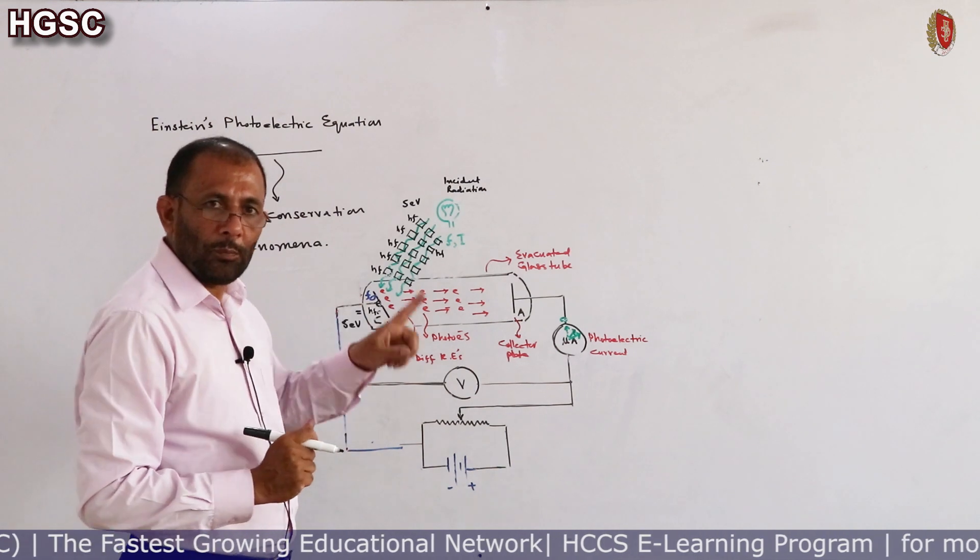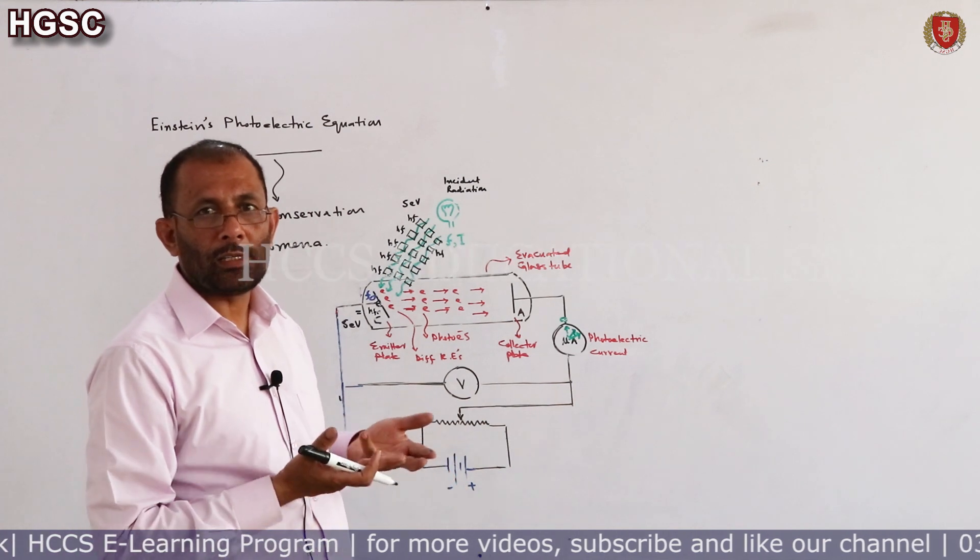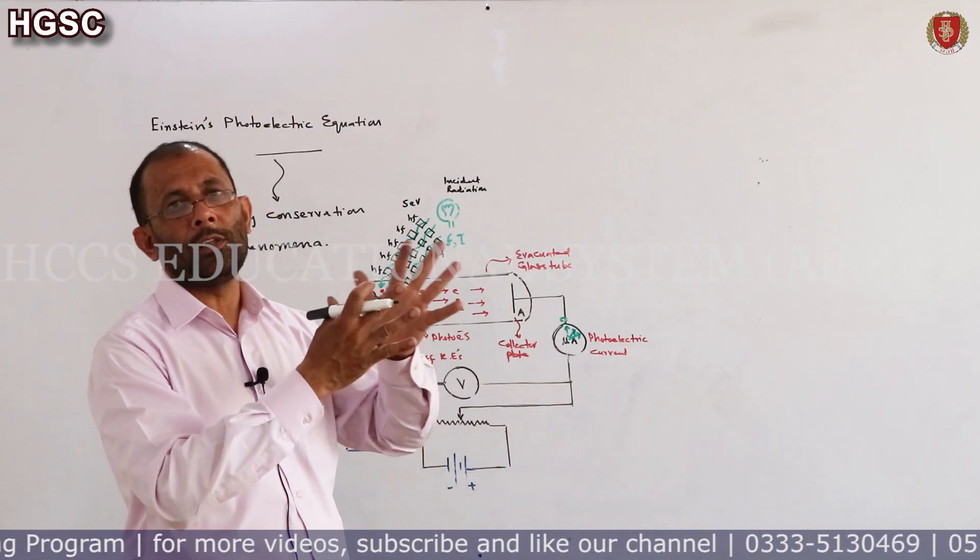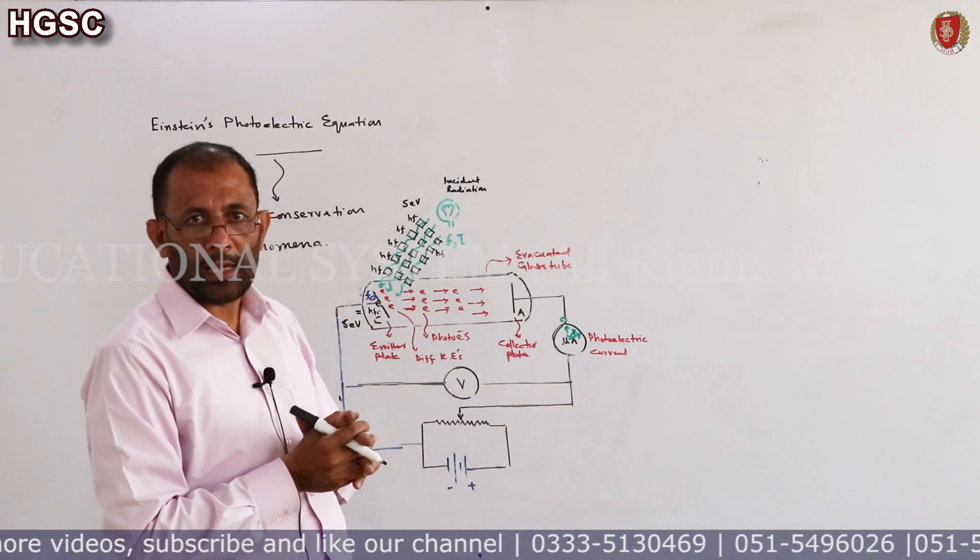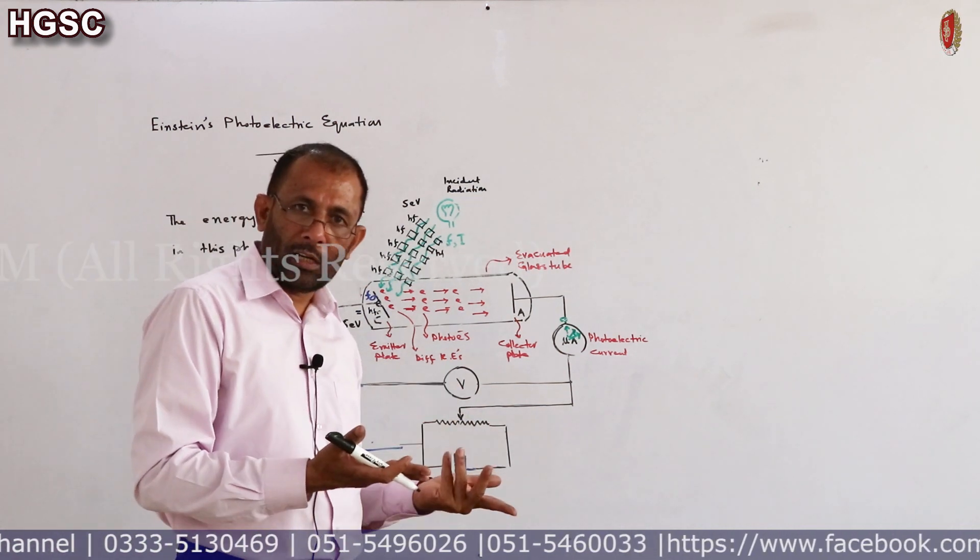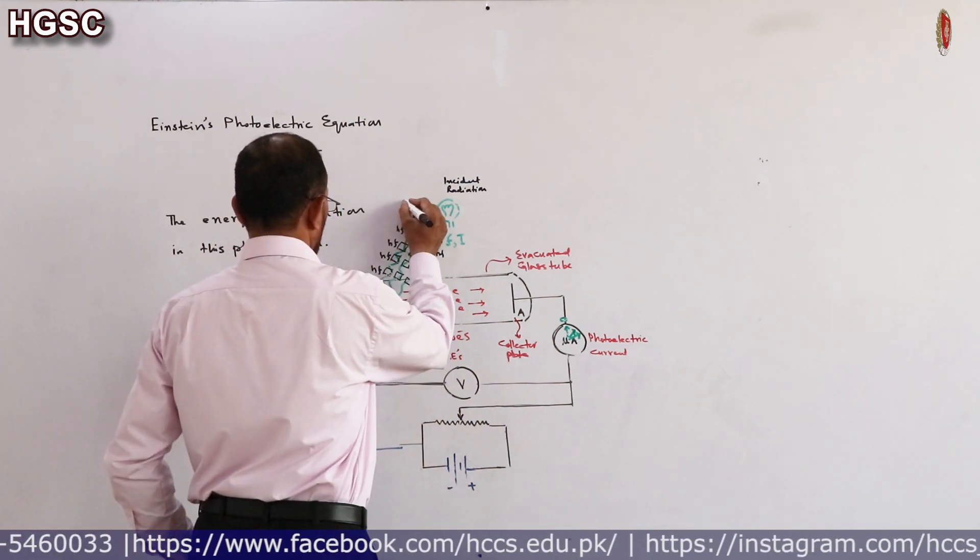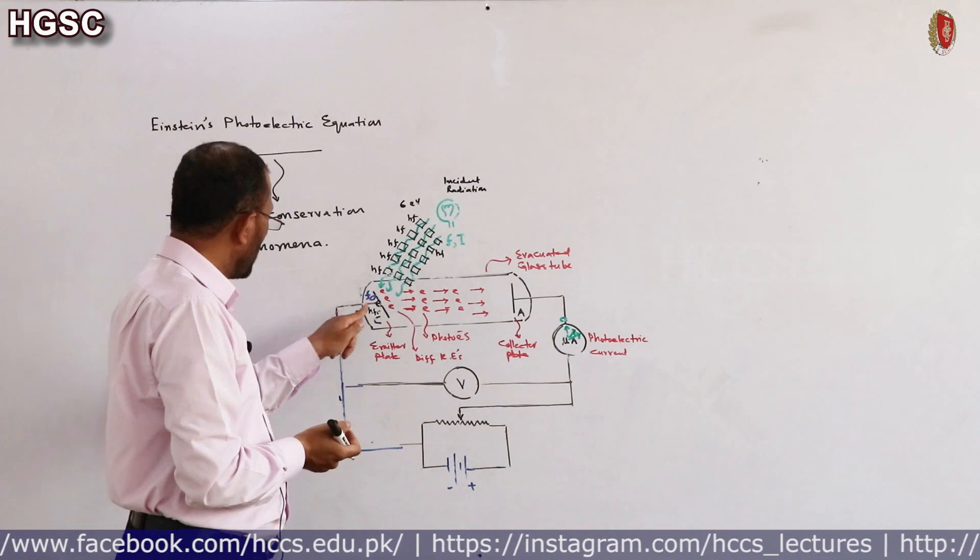If the energy of these photons is 5 electron volts and the work function of metal is also 5 electron volts, photoelectric emissions will occur, but all the ejected electrons will have kinetic energy zero. None of the electrons would have kinetic energy. Minimum kinetic energy of electron will be zero and maximum will also be zero.